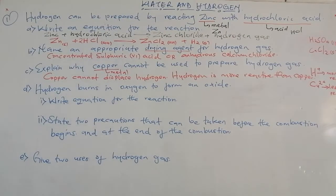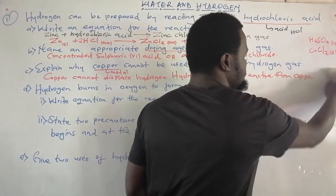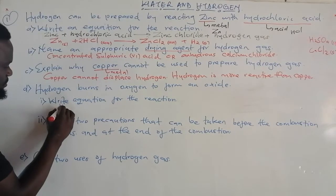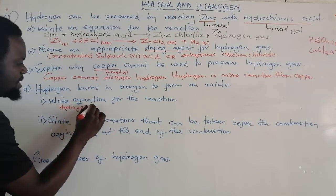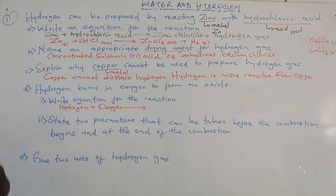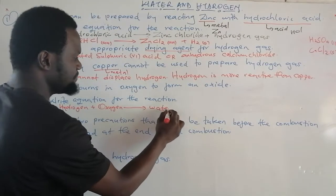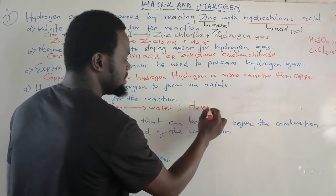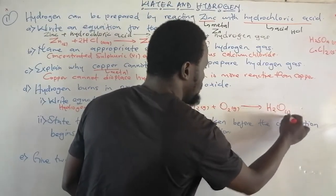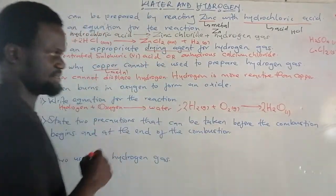Next question: hydrogen burns in oxygen to form an oxide. When hydrogen burns in oxygen, it forms an oxide — and the oxide of hydrogen we all know is water. So hydrogen gas reacts with oxygen gas to form water. Water is a universal solvent. We can balance the equation by putting a coefficient of two for hydrogen and two for water. And we are done.